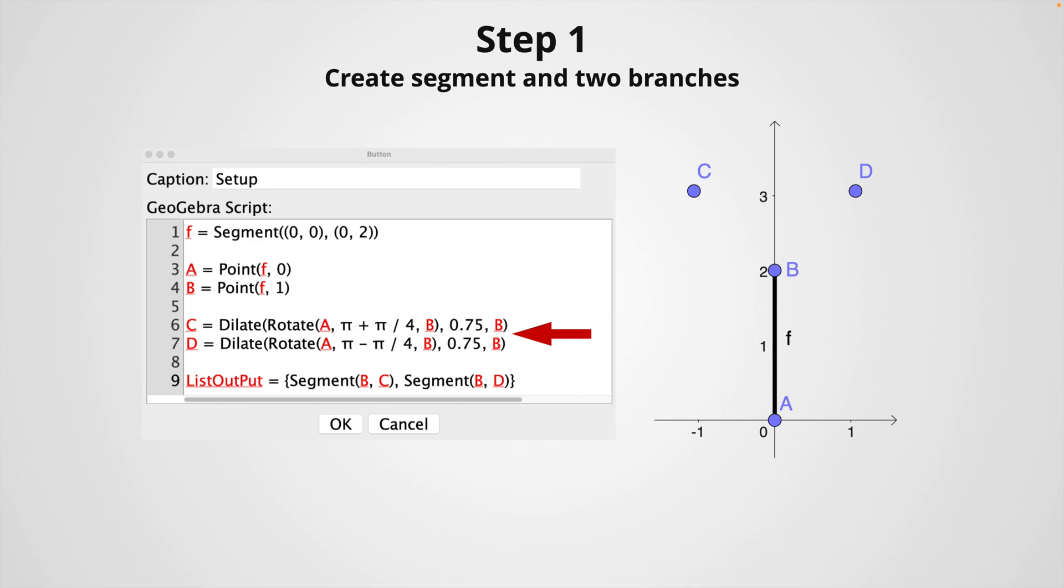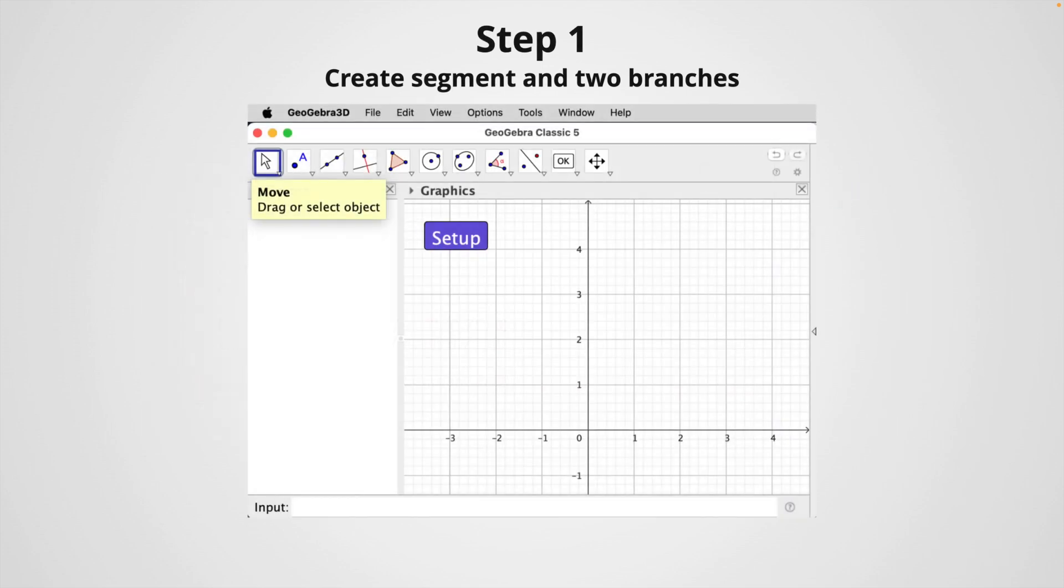In lines 6 and 7, we create points C and D to draw my branches. Here is where I apply the rotation and dilation of the angles that I mentioned before, 5π/4, 3π/4 and the shrinking factor 0.75. Finally, I define the list output as a list containing the two branches. Then we click on OK and the button now will be available in the graphics view, as you can appreciate here.